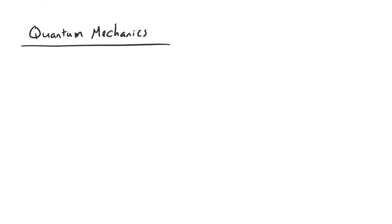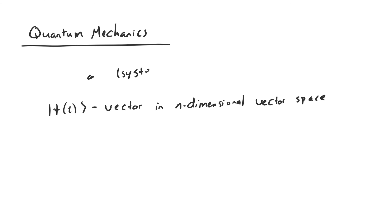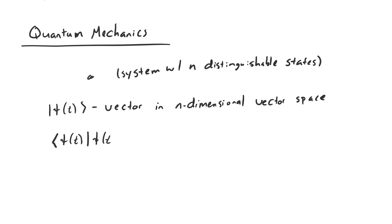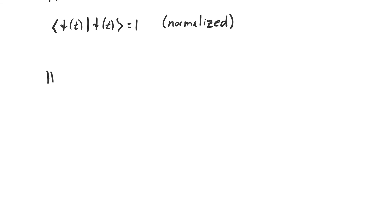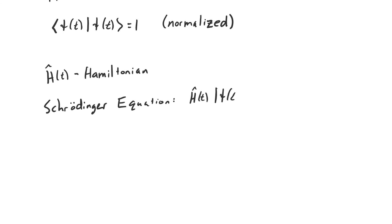Quantum mechanics is fundamentally different. It models physical systems as vectors in an n-dimensional vector space over the complex numbers, where n is the number of distinguishable states of the system. Further, these vectors have to be normalized, so their inner product with themselves is equal to one. And like the position in classical mechanics, if we know psi for all times, then we know any quantity about the system we'd be interested in. Instead of a force, in quantum mechanics we're given a Hamiltonian, which is analogous in the sense that it drives the evolution of the system. And instead of Newton's second law, we use the Schrödinger equation to find how psi changes with time based on the Hamiltonian.